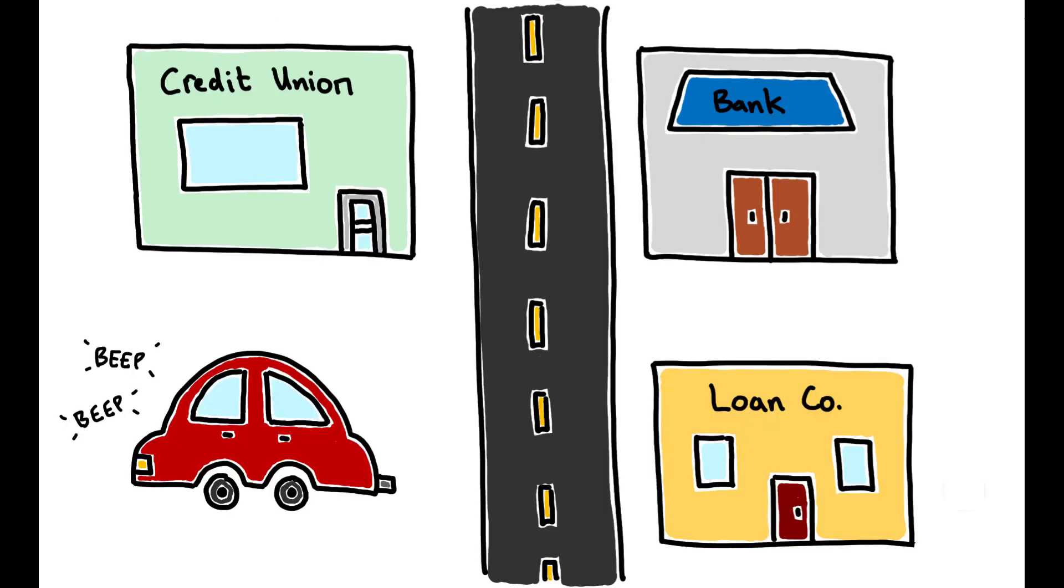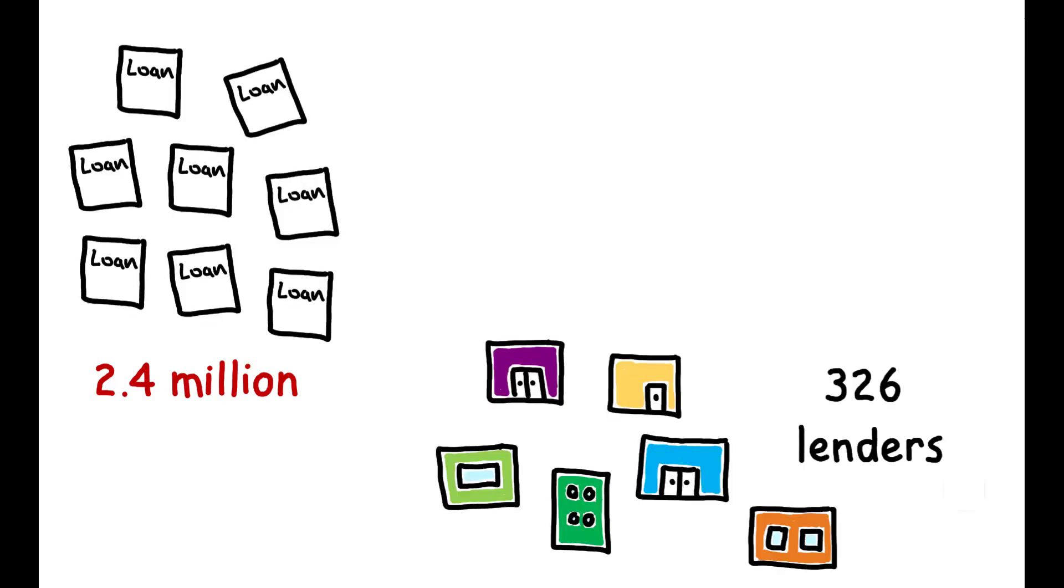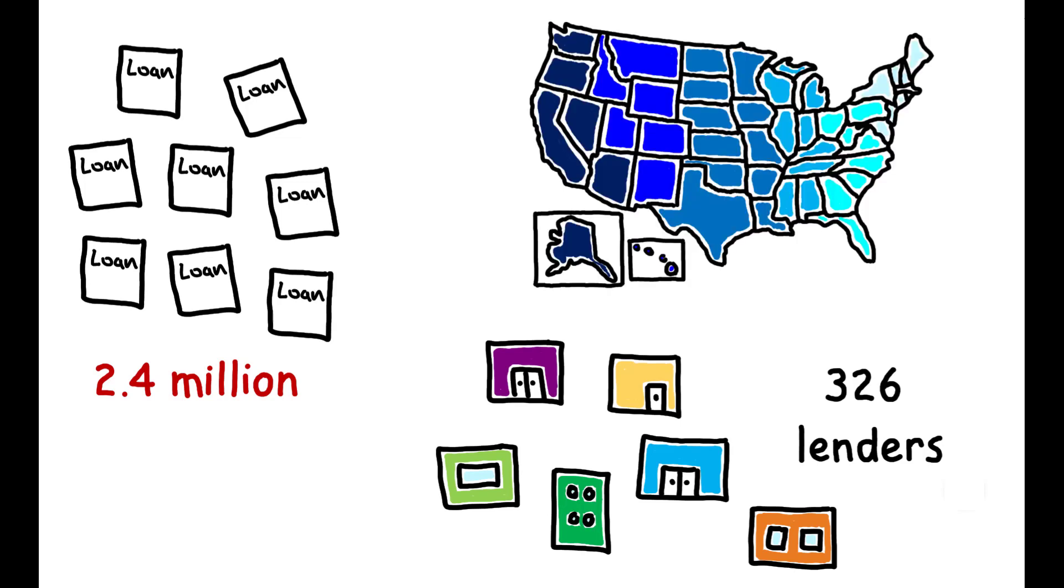To what extent is price dispersion a problem in this market? Are similar borrowers paying different interest rates for the same loan? To answer this question, the authors use an administrative data set covering 2.4 million loans extended by 326 different financial institutions in all 50 states.